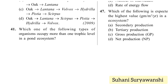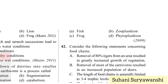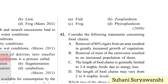Which type of organism occupies more than one trophic level in a pond ecosystem? Options: fish, zooplankton, frog, or phytoplankton. Phytoplankton is only a producer; zooplankton is only a primary consumer. Fish can occupy more than one trophic level, so option A — fish — is the right answer.